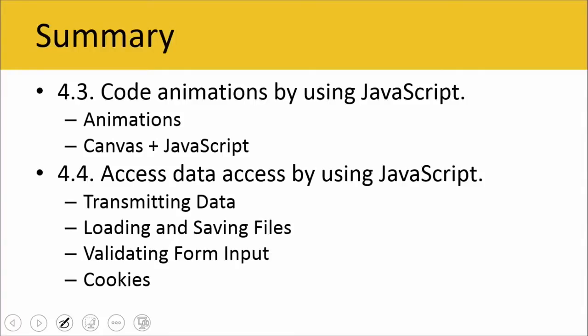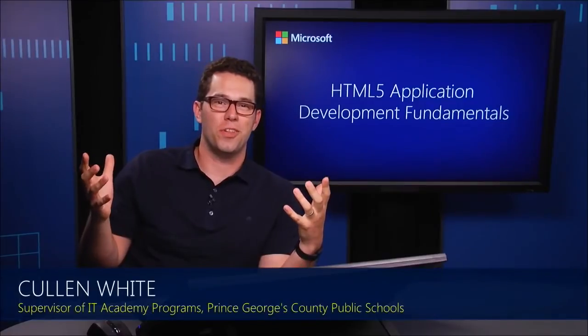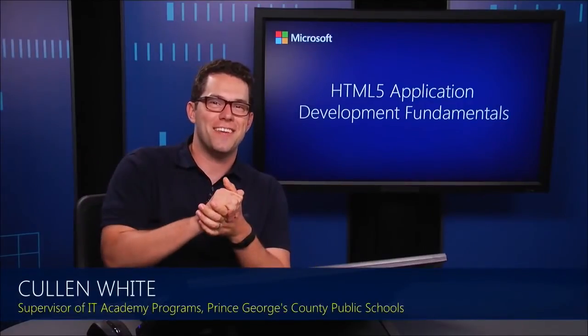That's it for this presentation. In section 4.3, we coded animations by using JavaScript — talked about how you would do that, the different types of animations you could create, and also how you can manipulate a canvas element. We also talked about how you can access data using JavaScript, transmitting data, loading and saving files, validating form input, and also cookies. Thanks again for joining me. I'll see you again in Module 10.